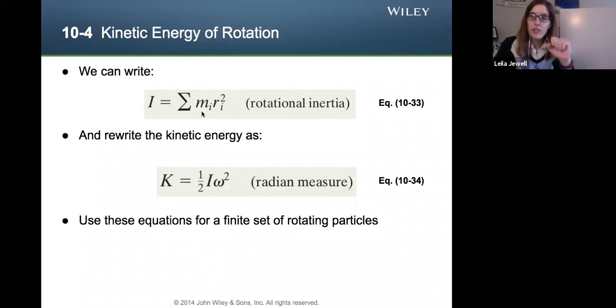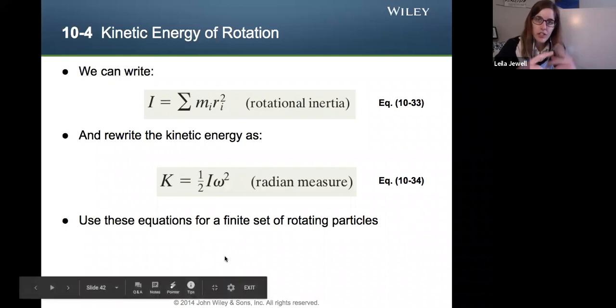If you just have individual particles, you can sum up each of those masses and their distance from the axis of rotation. You can also then rewrite the kinetic energy. Now that we have this I definition officially, we can plug that into our previous equation, rewrite our kinetic energy as 1/2 I omega squared, where again our angular velocity here is in radians per second. So the radians matter. And this is our rotational kinetic energy, the energy that goes into something spinning or rotating.